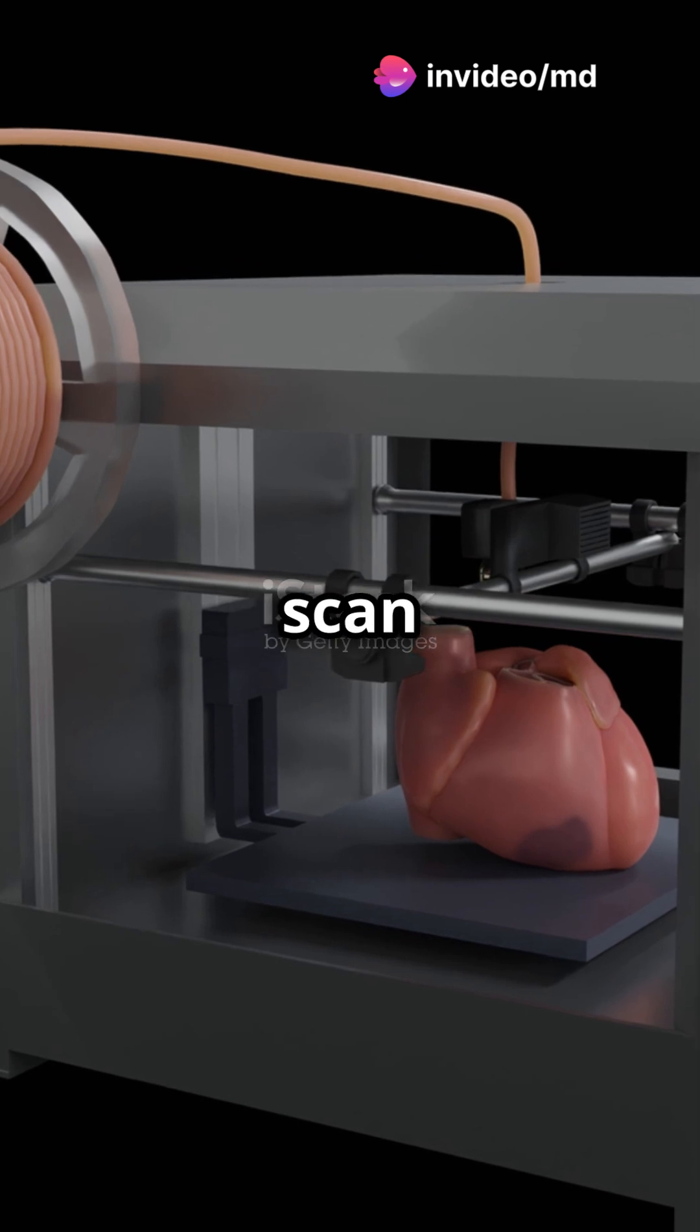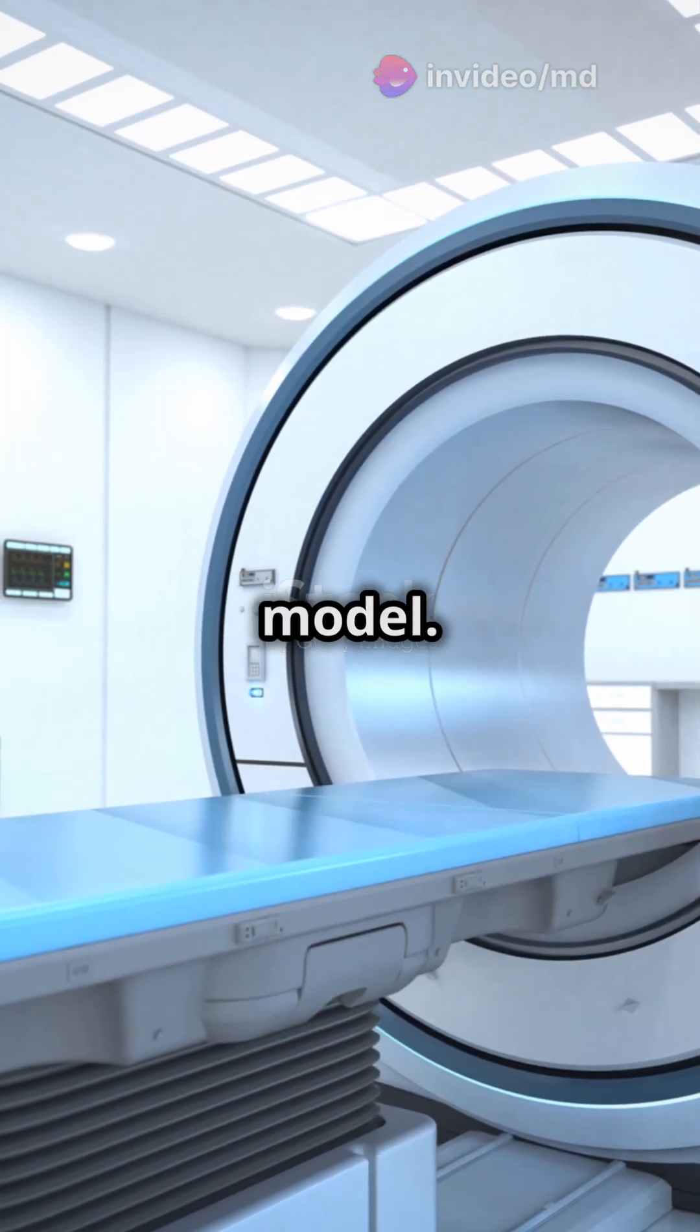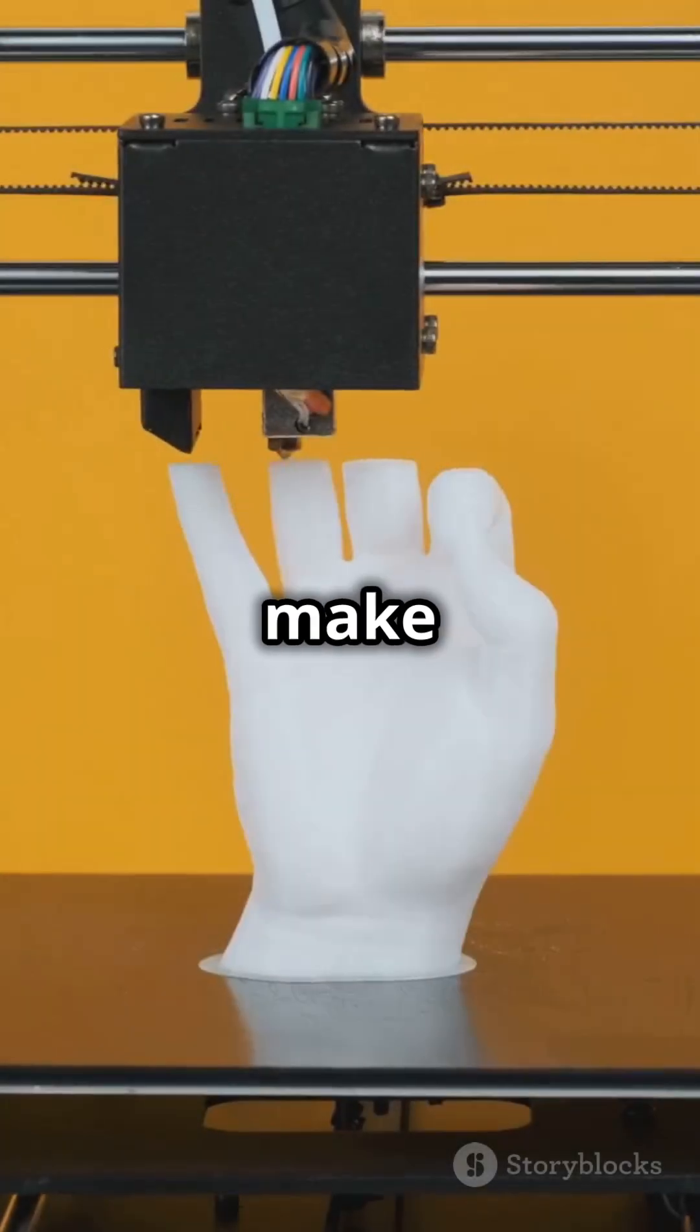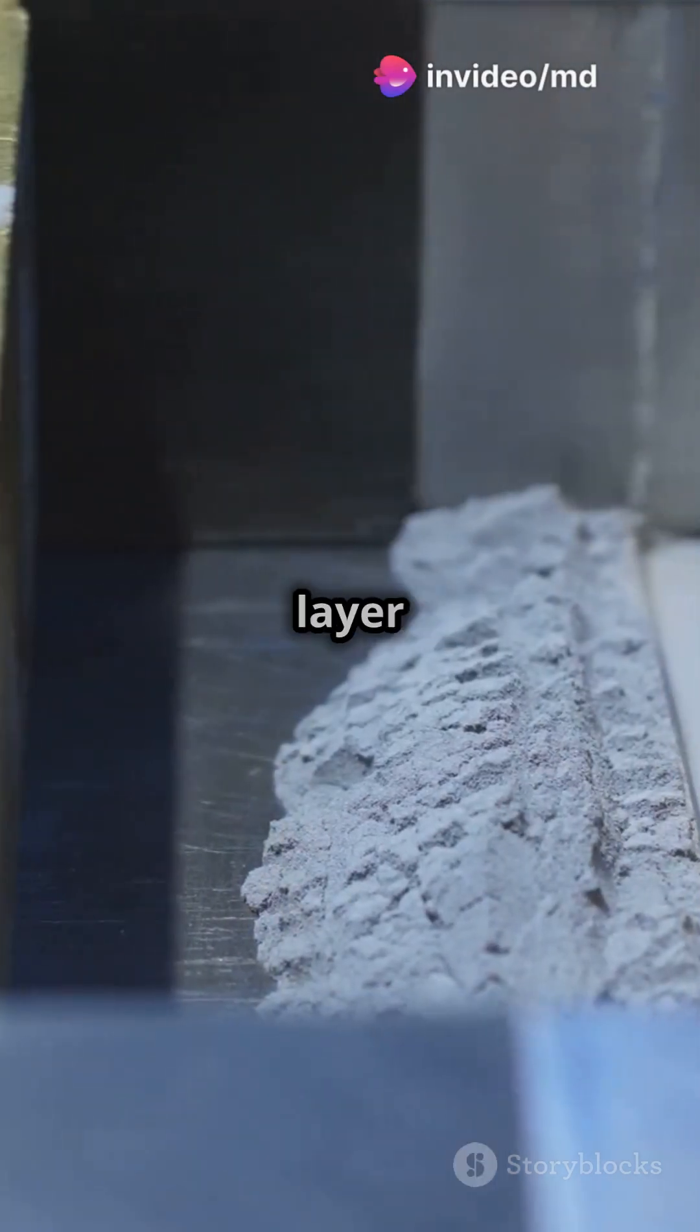Step 1: Doctors scan your organ with MRI or CT scans to get the perfect 3D model. Step 2: Scientists mix your stem cells with a gel to make bio-ink. Step 3: The printer builds your organ layer by layer.